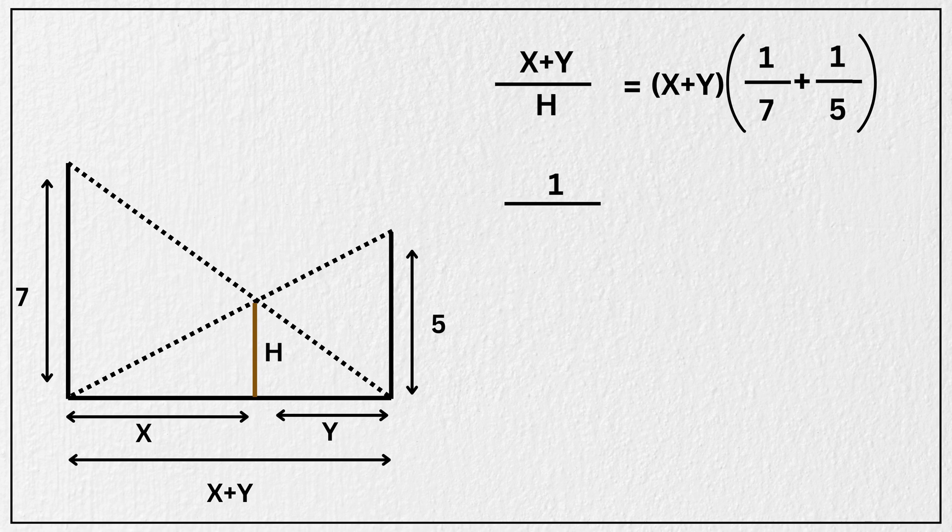We are left with, 1 divided by h equals 1 divided by 7 plus 1 divided by 5.